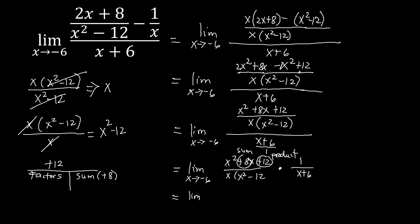So we look for positive factor pairs. We have 12 times 1, that's 12, and 12 plus 1 is 13 — not the sum we need. Next, 6 times 2 is 12, and 6 plus 2 is 8 — that's positive 8, which is our sum. So these are the factors of our trinomial.